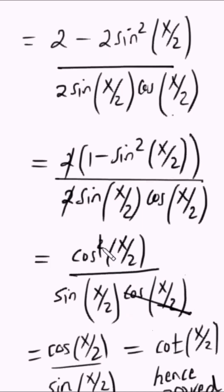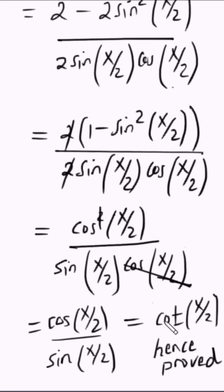If I divide one cos in the numerator and one cos in the denominator, I remain with cos of x over 2 divided by sin of x over 2, which equals cot of x over 2. Hence proved.